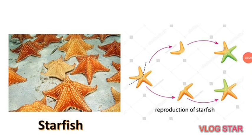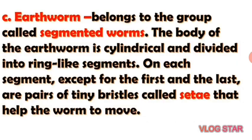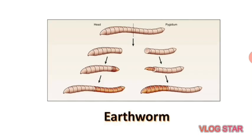Starfish can also reproduce through sexual reproduction. Earthworms belong to the group called segmented worms. The body of earthworms is cylindrical and divided into ring-like segments. On each segment, except for the first and the last, there are pairs of tiny bristles called setae that help the worm move. Each segment can regenerate.